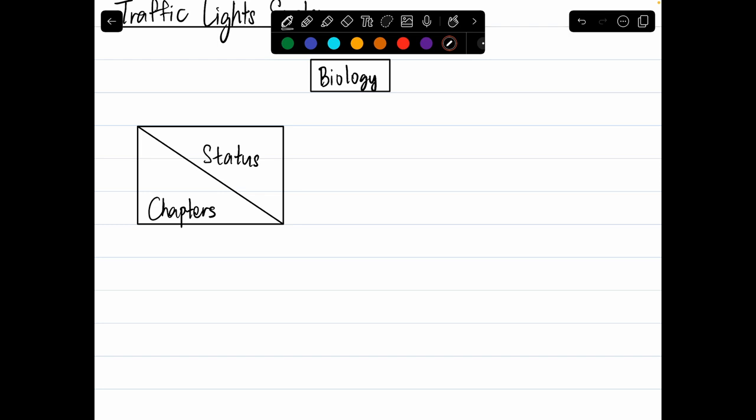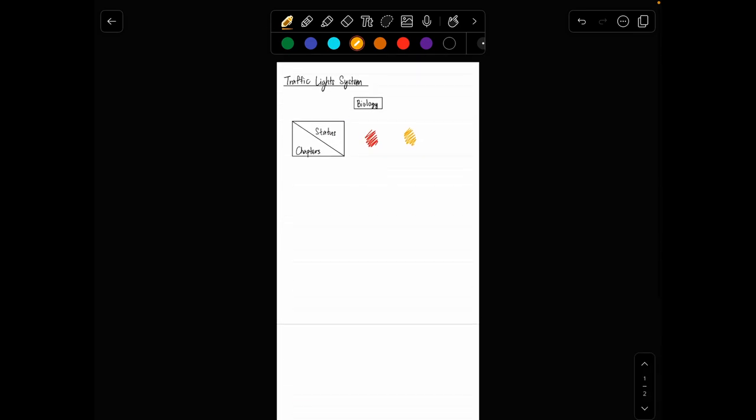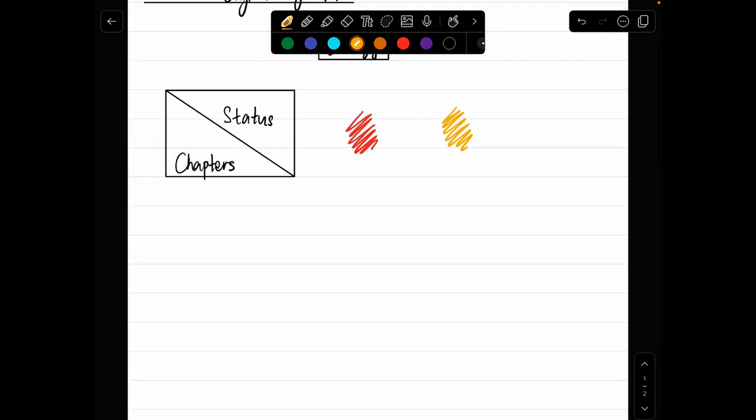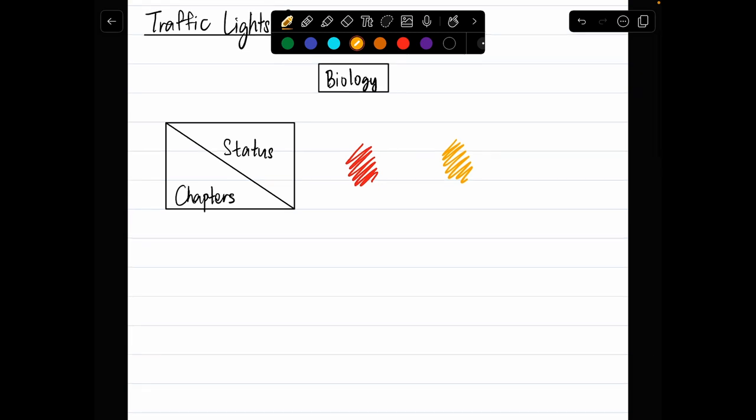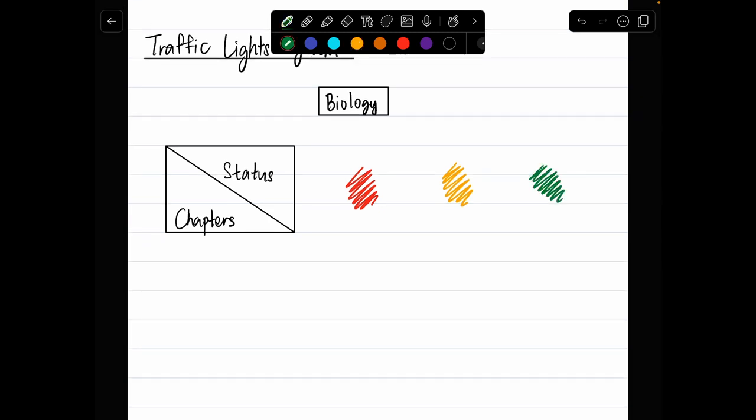So we have biology as a subject, then we have two parts to this particular system. One is status and the other is chapters. For status, we have three distinct colors. As the name suggests, traffic lights, we have red, then we have amber, this might be amber or yellow I'm not very sure with the color's name, and then we have green.